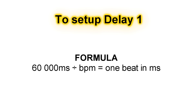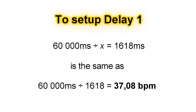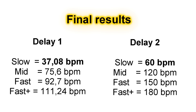The formula is: 60,000 milliseconds divided by BPM equals 1 beat in milliseconds. Why 60,000? Because there are 60,000 milliseconds in a minute. Since BPM is the number we need to find, our formula becomes: 60,000 divided by x equals 1618 milliseconds. We can swap x and the milliseconds: 60,000 divided by 1618 equals 37.08 BPM. So delay 1 should be 37.08 BPM and delay 2 should be 60 BPM.